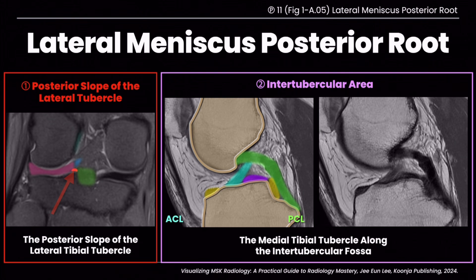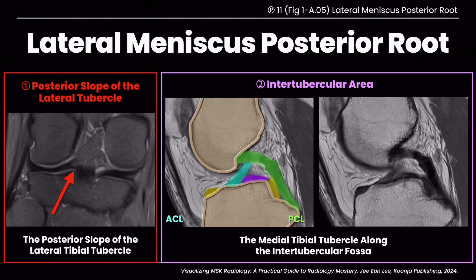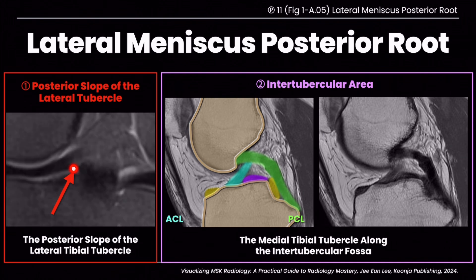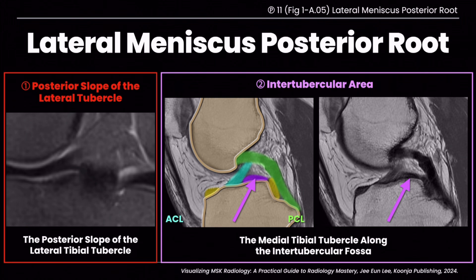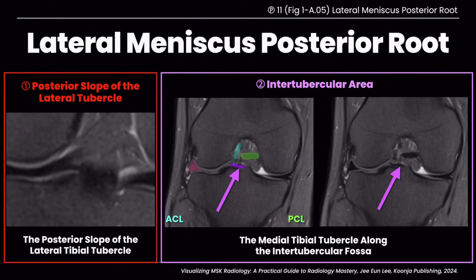The minor component is best seen on coronal images, and like the posterior root of the medial meniscus, it's a short ligament that appears briefly on just one cut in the coronal image. The major component, located in the intertubercular area, often appears on sagittal images as a thin, low-signal band running parallel to the tibial plateau. It courses anteromedially from the posterior horn of the lateral meniscus along the intertubercular crest, and compared to other meniscal roots, it appears longer and less striated. On coronal views, look for small, dark foci crossing the intertubercular crest — these fibers anchor near the medial tibial tubercle, appearing as tiny dots or short bands traversing bone.